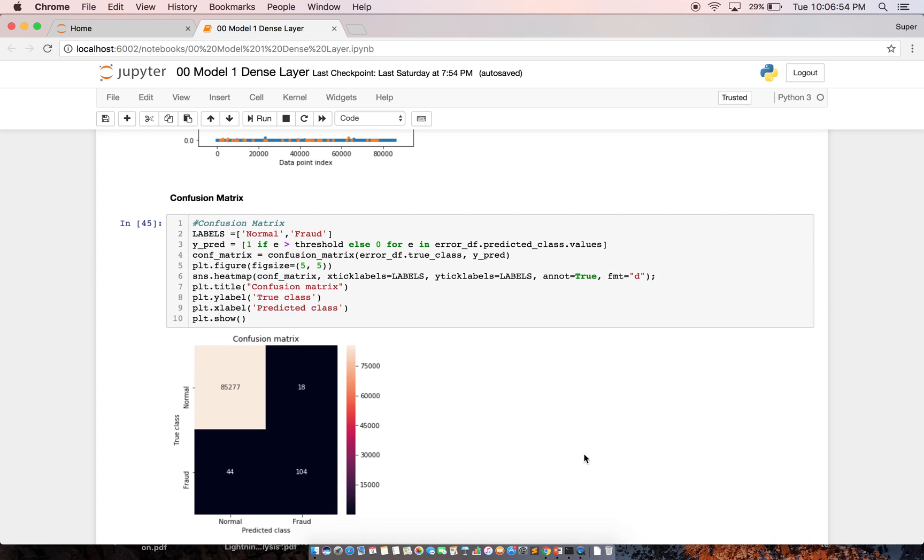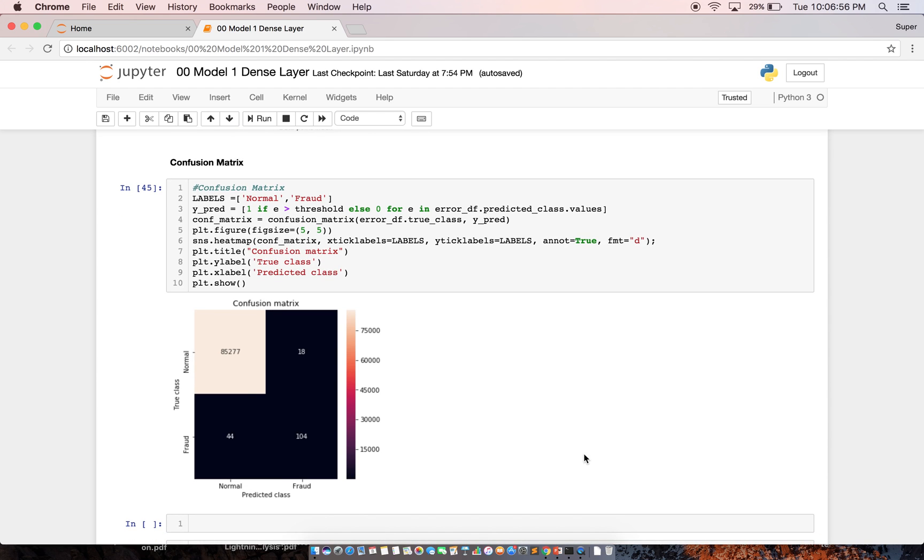And I looked at the confusion matrix. And the confusion matrix indicates that the model is performing good on predicting true positive and true negative. That means predicting fraud transaction as well as non-fraud transaction.